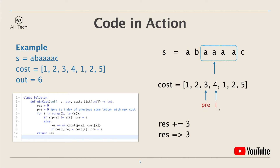Remember, the pre pointer points to the letter with the maximum cost of deletion. Now pre is updated to point to the cost of four. Next is still a repeating 'a', and we delete the 'a' with the smaller cost, adding one to res. Res becomes four, and pre still points to four since that's the maximum cost so far.